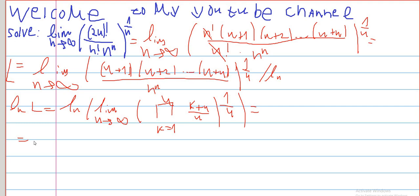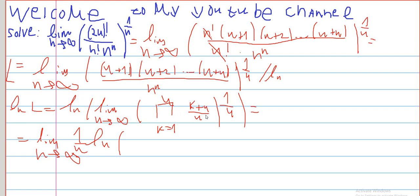Since ln is a continuous function, ln and the limit will commute, so the limit can pass outside. We have a limit as n approaches infinity of ln of the expression, and we will have 1 over n in the front because of the property of ln.